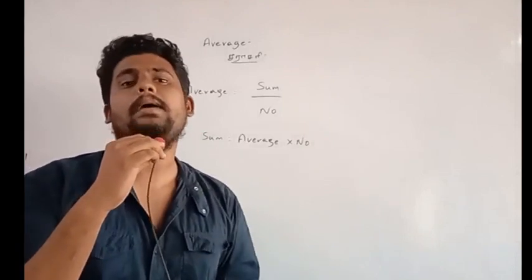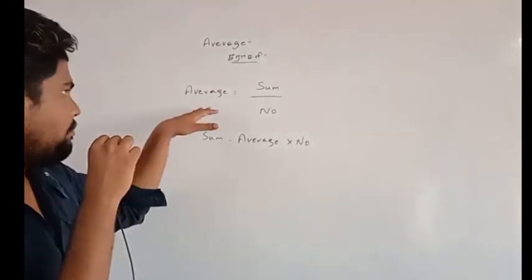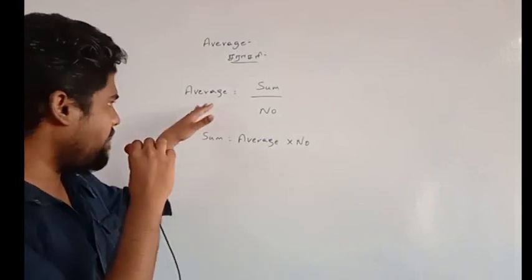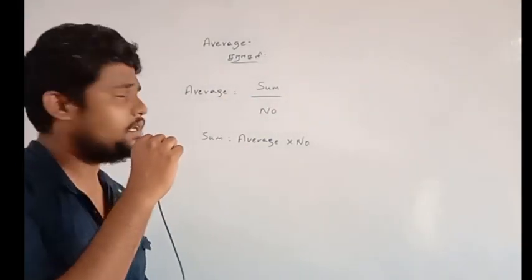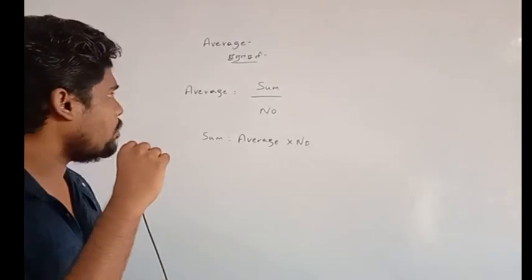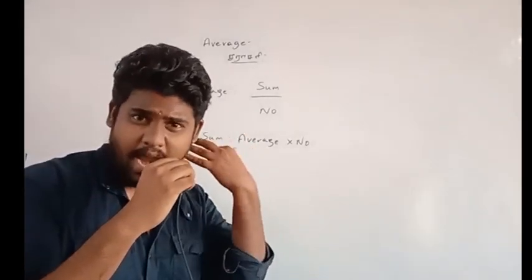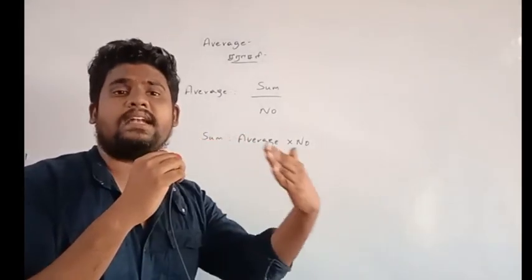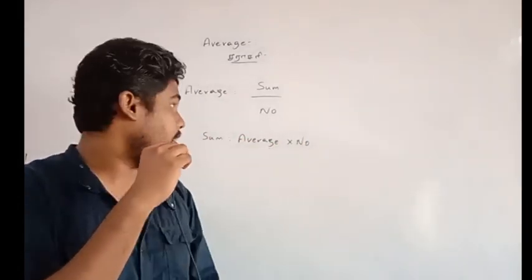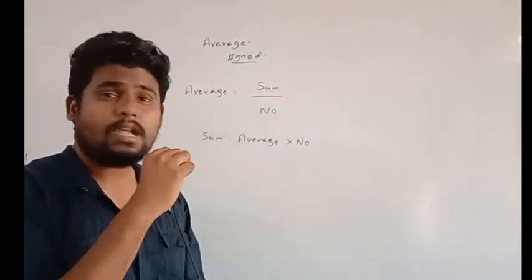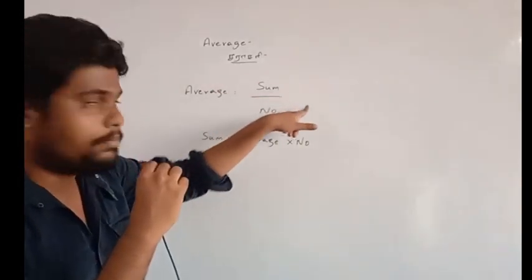Now if you are looking for average, first of all — what is average? Average equals sum divided by number. Sum divided by number — how many times the number, right.